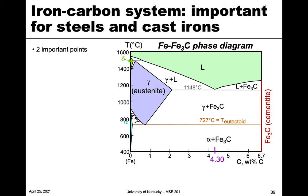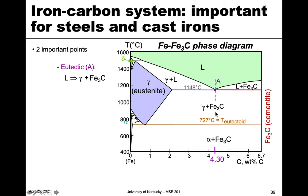There are two important points in this phase diagram, and we've already talked about these types of reactions. The first one is point A, which is over here at 4.3 weight percent carbon. At point A, this is liquid above and then two solid phases below — even though one goes by a Greek letter and one is a carbide. So this is a eutectic reaction: liquid goes to gamma plus Fe3C. This is actually a really high amount of carbon, so this is more important in cast irons and really doesn't come into play when we talk about steel systems.